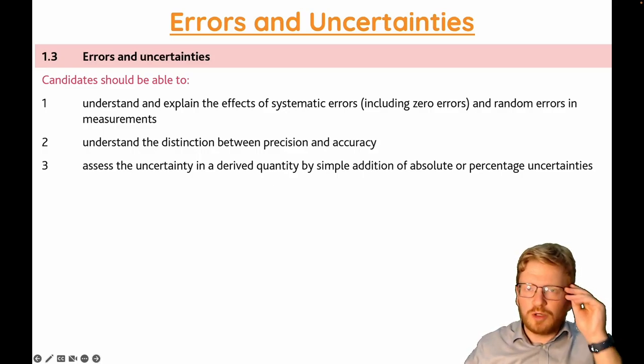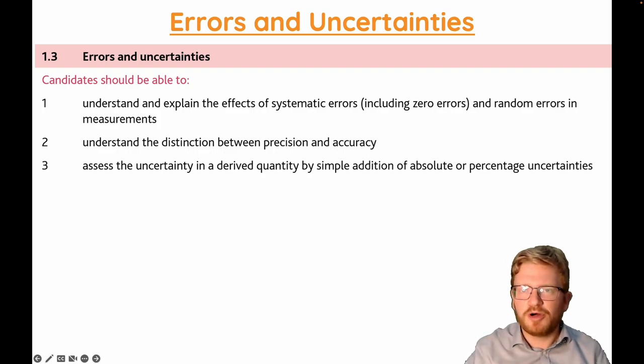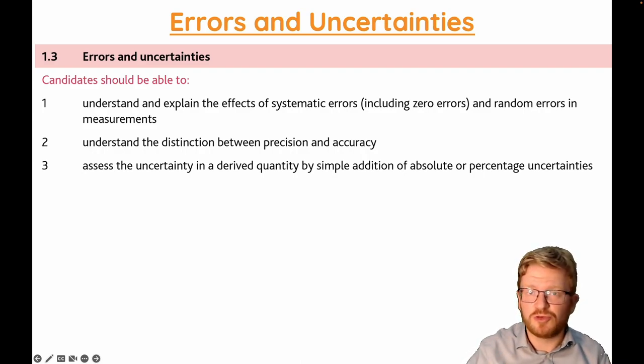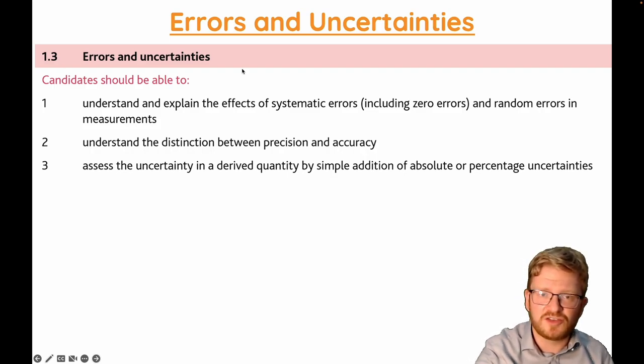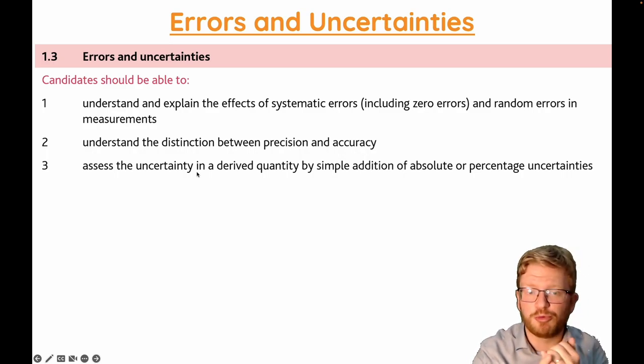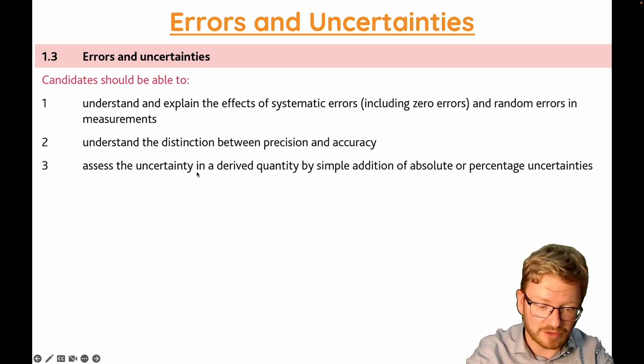Hi everybody, today we are talking all about errors and uncertainties. This is a really key part of your course. It definitely will come up, certainly in paper 3, but there's also opportunities where you'll have to use this in paper 2 as well. We're going to look at the effect of particular types of errors and how we deal with them. We are then going to get the distinction between the terms precision and accuracy, and then we're going to look at uncertainty in a derived quantity by how we combine it. Often that's called error propagation or propagation of errors.